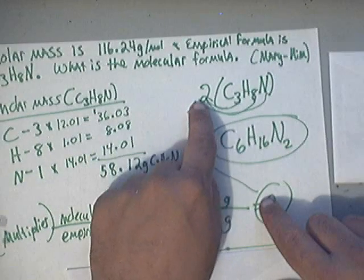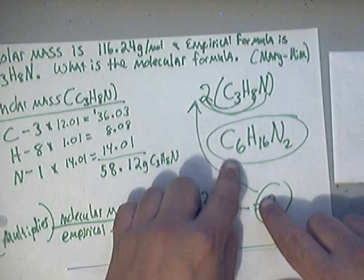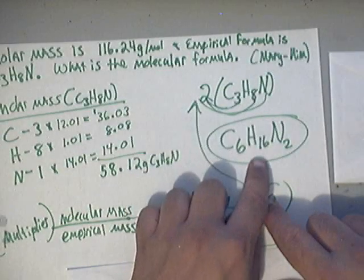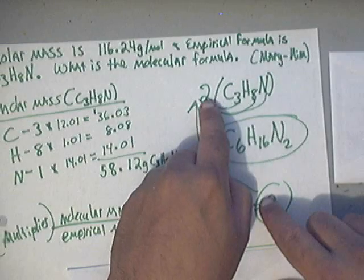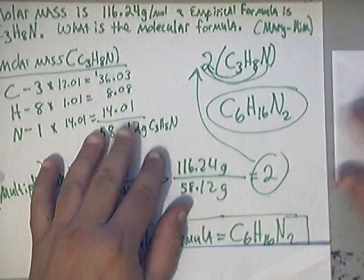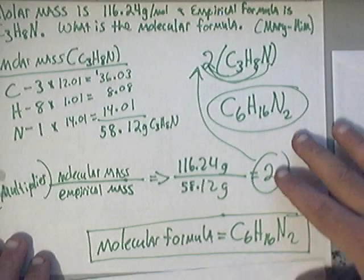When you do this, you take this 2, multiply the subscript 3, you get 6. You take the 2, you multiply the 8, you get 16. You take the 2, you multiply the N, and you get N2. So, that will give you your molecular formula.